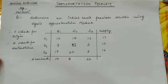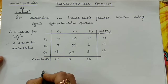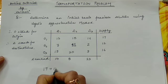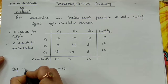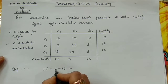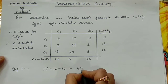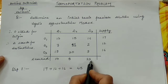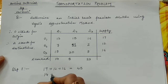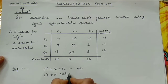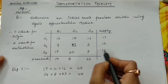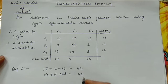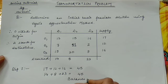To check for balance, we sum the supply values: 17 plus 12 plus 16 equals 45. Then taking the destination part: 14 plus 8 plus 23 also equals 45. Since supply and demand are equal, this is a balanced transportation matrix.